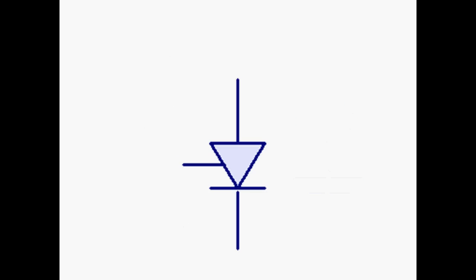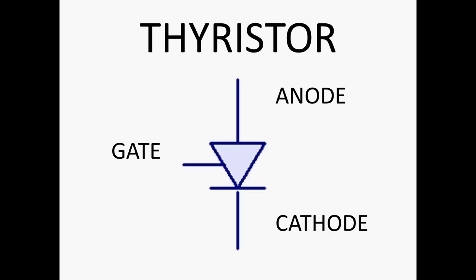This one is a thyristor and it's got three connections: anode, cathode and gate, positive, negative and then the one that triggers it. This is a component that acts as an electronic latch. You use this to keep an alarm system locked on or keep an LED lit even after the thing that triggered it is no longer active.